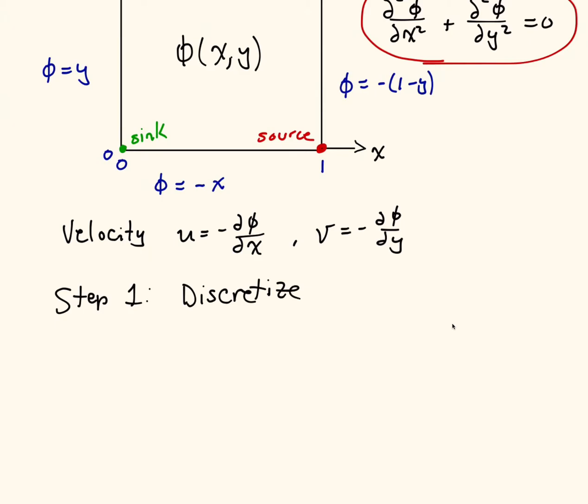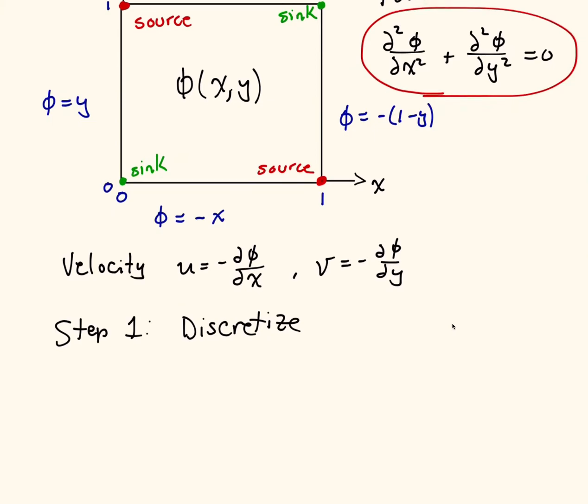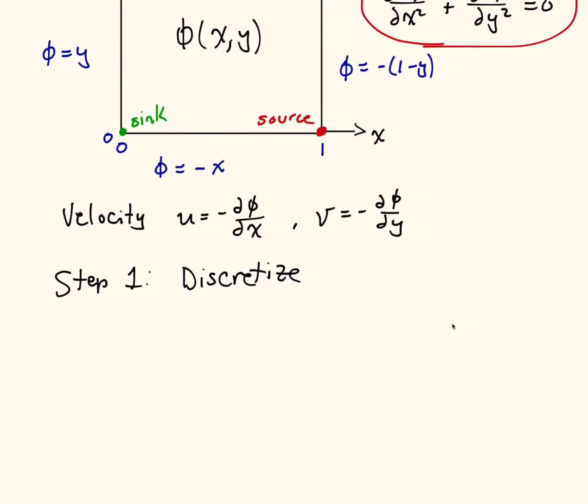Now, this equation just has two spatial derivatives, the two second derivatives with respect to x and y, and those we're going to discretize with our normal standard central finite difference. Now, before we do that, let's talk about how we're going to represent φ, and the notation I'm going to use is φ_ij, which means we're at the i-th x location and the j-th y location.